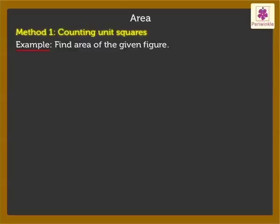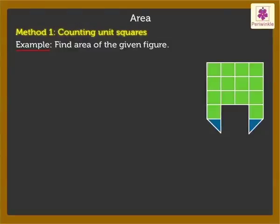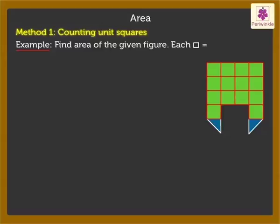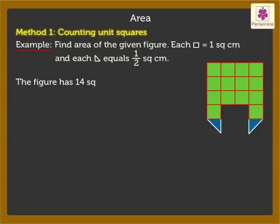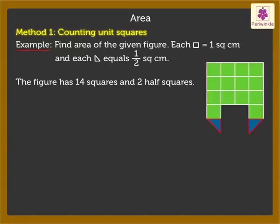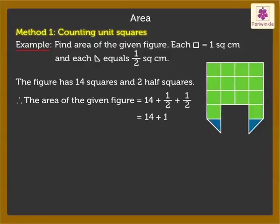Now let's find the area of the given figure. Here each square equals one square centimeter and each half square equals half a square centimeter. On counting, we get that the given figure has 14 squares and two half squares. Therefore the area of this figure is equal to 14 plus half plus half, which is 15 square centimeters.